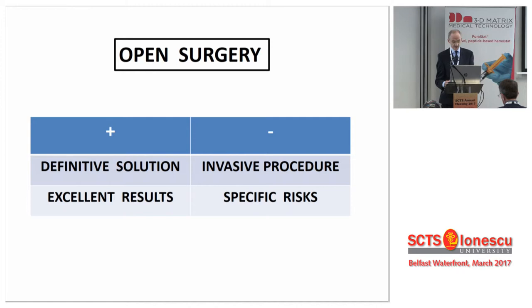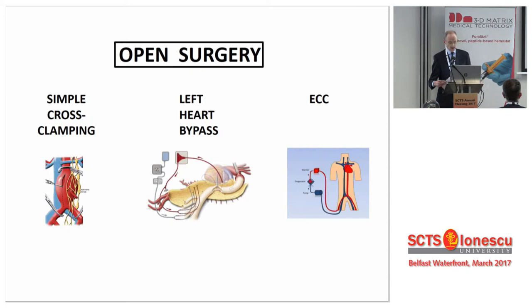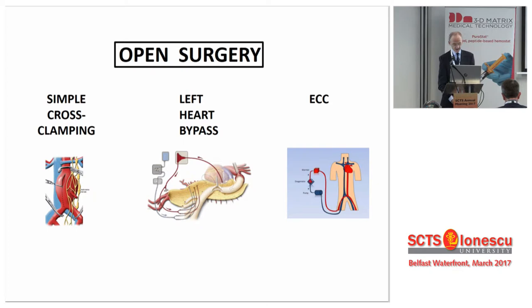On the other hand, the results of open surgical repair in the hands of experienced surgeons are excellent. In open surgery, there are basically three techniques described up to now. The simple cross-clamping technique — putting a clamp above and below the aneurysm, as illustrated here on the left with an open AAA — was originally advocated by Crawford. Nowadays, I think it's no longer used in thoracoabdominal open repair because the risks of damage to a variety of vital organs is seen as much too high. Simple cross-clamping, as of 2017, can be seen as history.